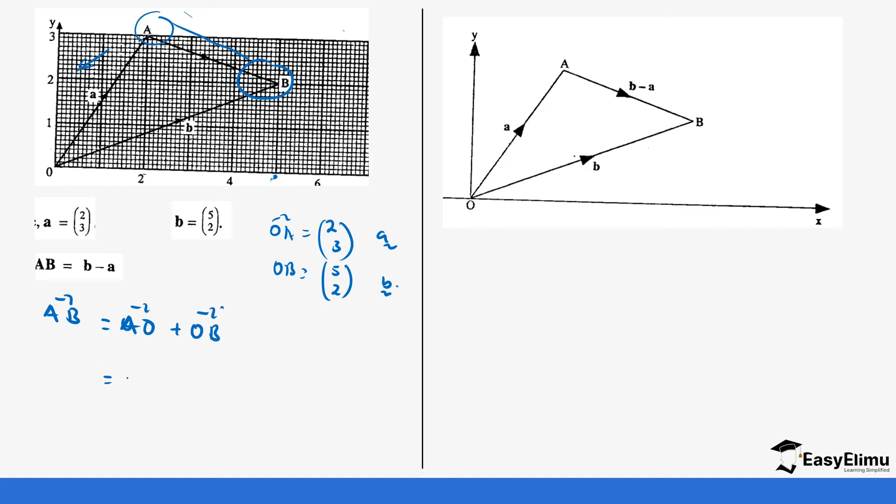So this is the same as negative A, remember it's opposite, plus B. Or in simple terms, this vector is going to be B minus A. And that's the reason why we are coming back here. So this is the same as our B is 5, 2 and our A is 2, 3.